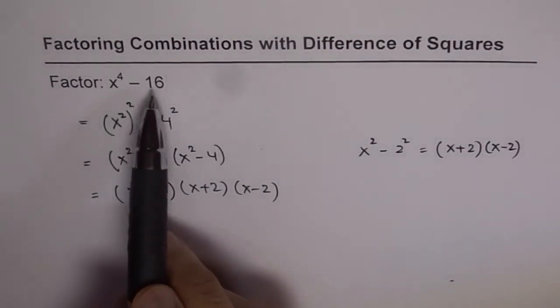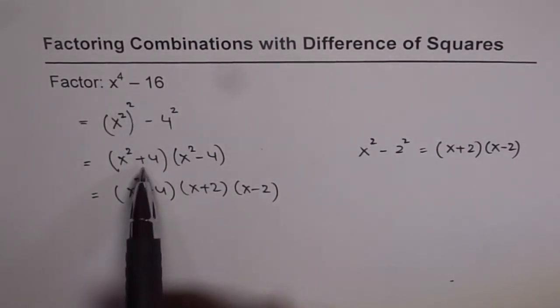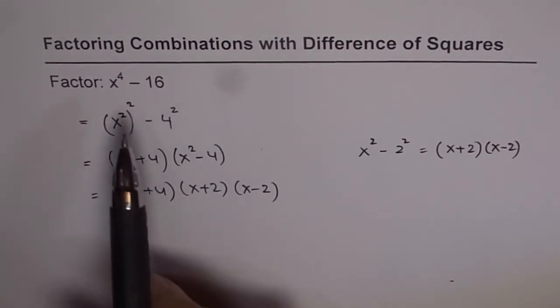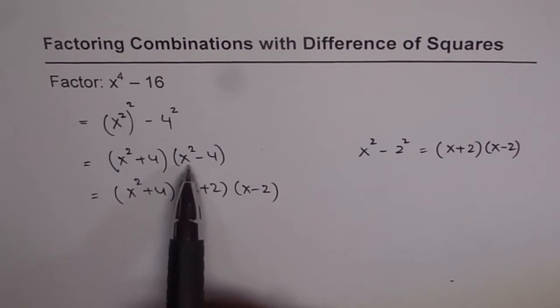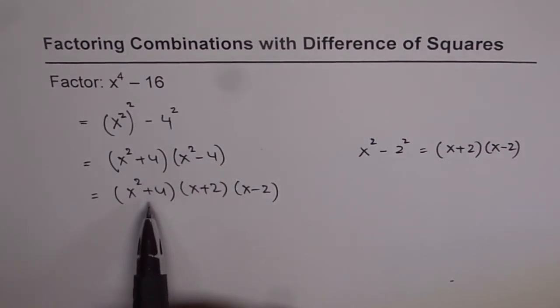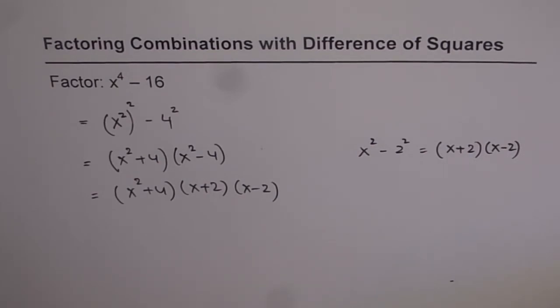So we see that x to the power of 4 minus 16 can actually be factored a couple of times. First treat it as a difference of squares, and then again we have a difference of squares, so you get three factors for this binomial. We'll explore a few more examples similar to this.